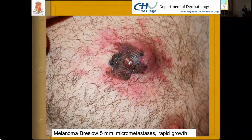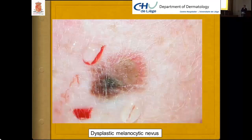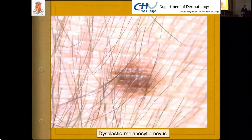Here is an SSM type — superficial spreading melanoma. This more treacherous lesion is a dysplastic melanocytic nevus, which is not malignant and not a pre-malignant lesion. And here is another dysplastic melanocytic nevus and a compound pigmented nevus.